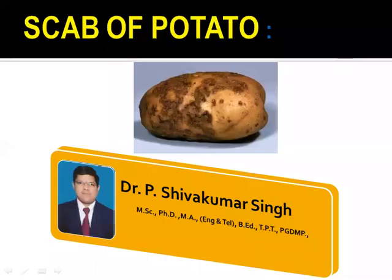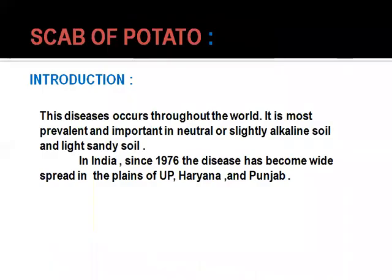Scab of potato is a bacterial disease that occurs throughout the world. It is most prevalent and important in neutral and slightly alkaline soil, and light sandy soil is suitable for growing this crop. In India, since 1976, this disease has become widespread in the plains of Uttar Pradesh, Haryana, and Punjab.